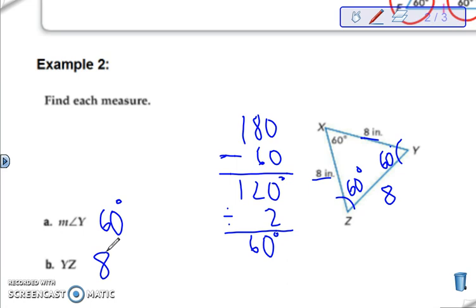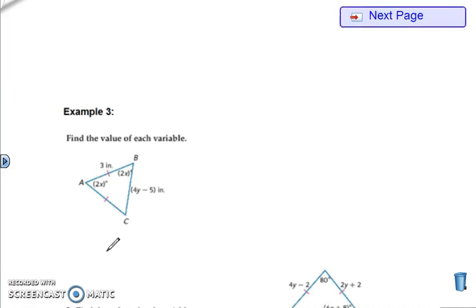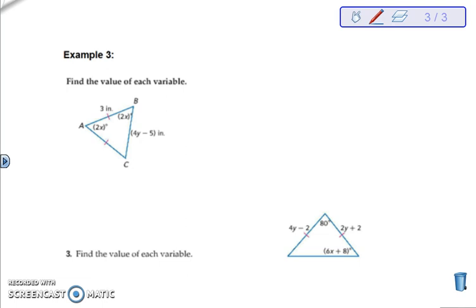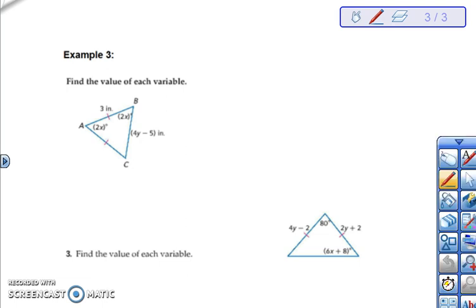Alright, 2A and 2B you can work out on your own. Again remember that those little marks in the corner mean that the angles are congruent. So you're most likely looking at an isosceles triangle. For example three, it's going to be the same thing we were just doing only now they've thrown in some equations.